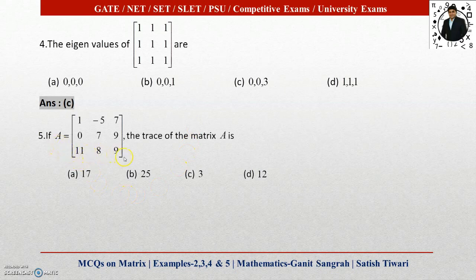Next question: If matrix A is a 3×3 matrix, then the trace of matrix A is... The trace of a matrix is the sum of diagonal elements, that is 1 + 7 + 9, and the sum of these three principal diagonal elements is 17. So option A is correct.